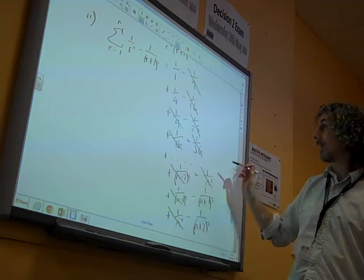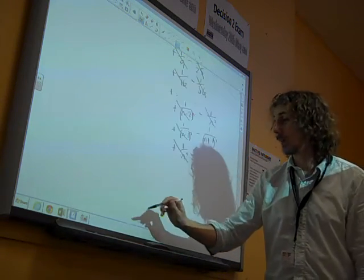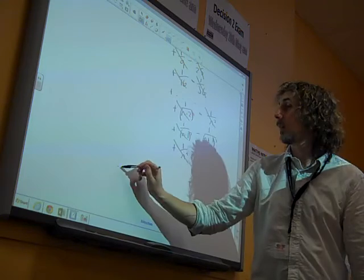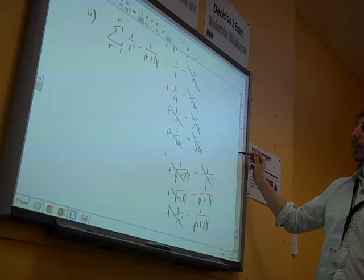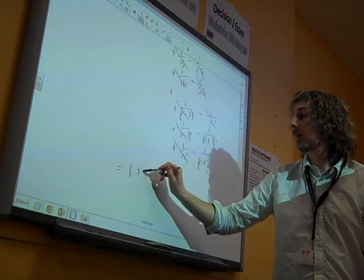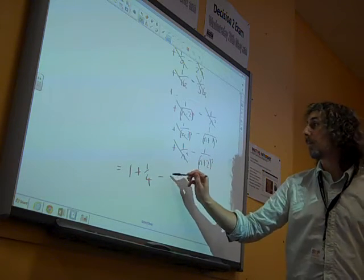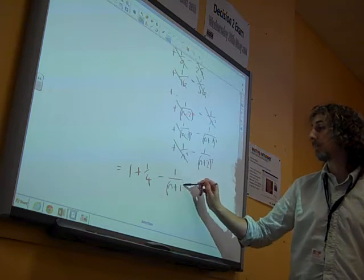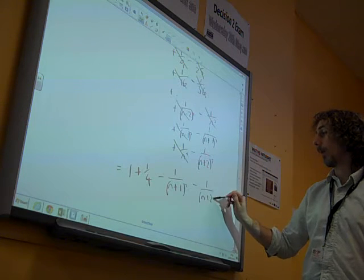And there's everything cancelled out. And we can see that we're left with, at the end of it all, up at the top here, we have 1 plus a quarter. And at the end here, we have minus 1 over n plus 1 squared, minus 1 over n plus 2 squared.